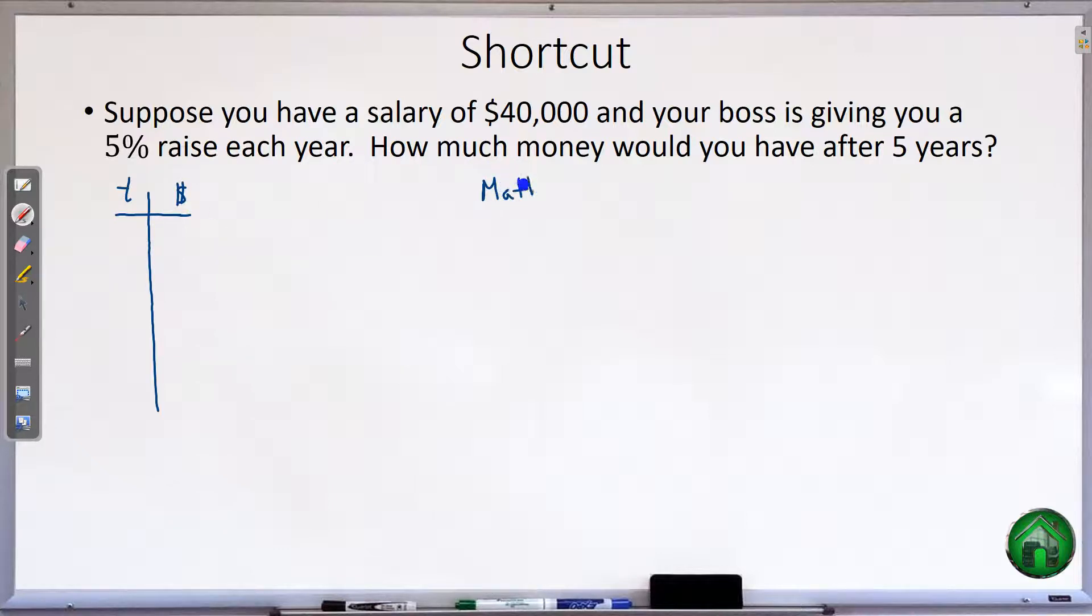We're going to have time on one side and then we're going to have our salary on the other. All the math is going to be over here to keep our table looking nice. So when we start the job at year zero, we are getting $40,000. And after one year, we get a raise. And so the old math we did was $40,000 plus 5% of $40,000. Now we can simplify that. We have two terms and they both have a $40,000 in common. So we can factor out that $40,000.